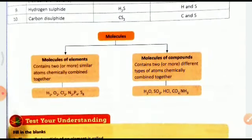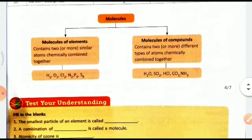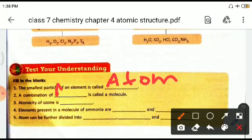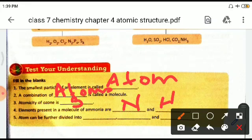Molecules of an element contain two or more similar atoms chemically combined together, while molecules of a compound contain two or more different types of atoms combined together. Test your understanding: the smallest particle of an element is called an atom; a combination of atoms is called a molecule; atomicity of ozone is three; elements present in ammonia NH3 are nitrogen (N) and hydrogen (H); atoms can be further divided into electrons, protons, and neutrons. I hope you enjoyed it — until we meet again, goodbye.